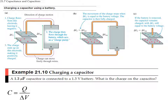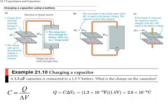As an example: a capacitor of 1.3 microfarads is connected to a 1.5 volt battery — what is the charge on the capacitor? We are given the capacitance C and the voltage V, and we solve for Q. Q equals C times V, giving us 1.95 microcoulombs. The units for capacitance are farads, named in honor of Michael Faraday, where one farad equals one coulomb divided by one volt.